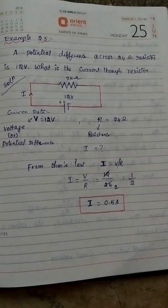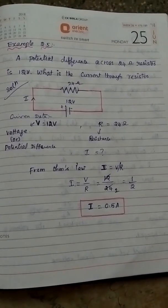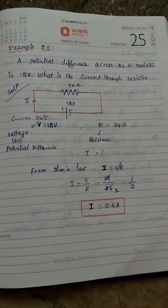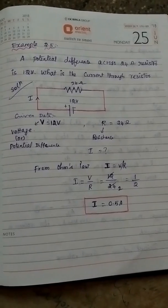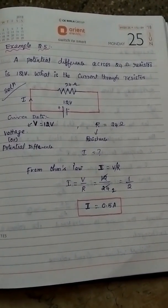The connection is parallel - a 12 volt battery with a 24 ohm resistor. Current flows through the positive terminal to the resistance. The given data: voltage equals 12 volts, resistance equals 24 ohms.